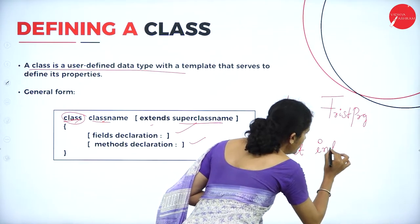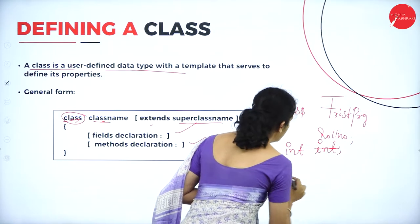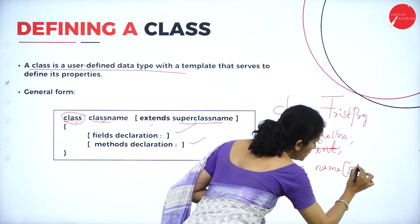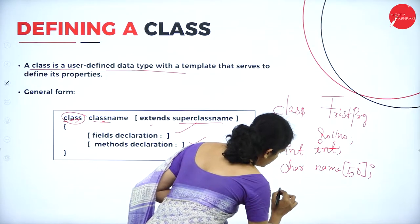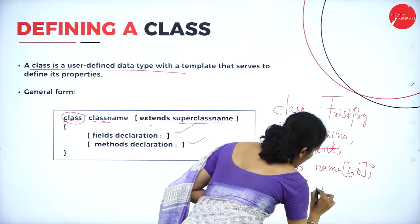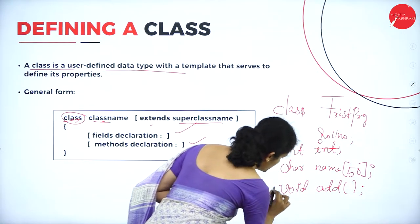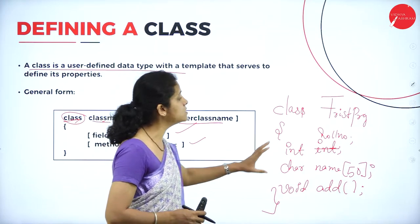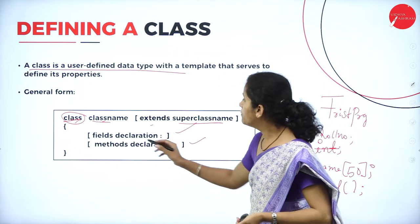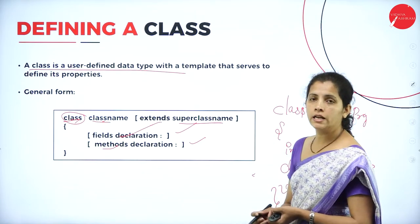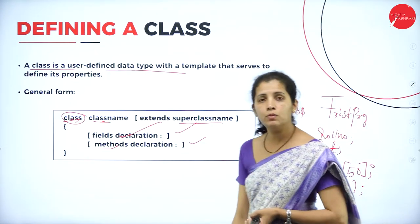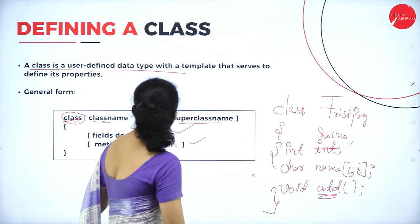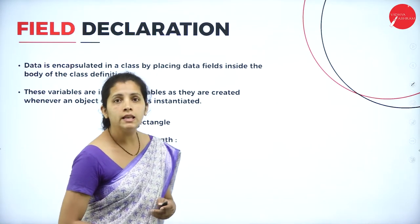Here is a simple class example. I start with the keyword 'class', then the class name 'FirstPrg', followed by curly braces. Inside I write the fields: 'int rollNumber' and 'char name[50]'. Then I write the method 'void add()'. So this class includes field declarations — int and char — as well as a method declaration — add.